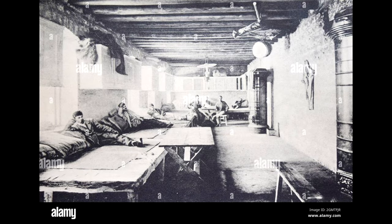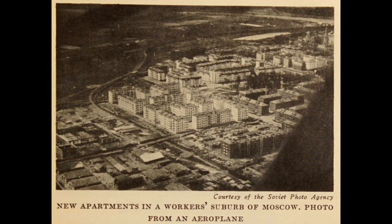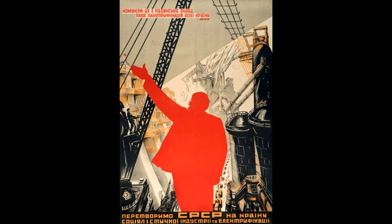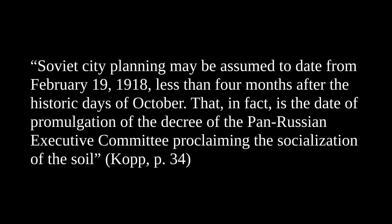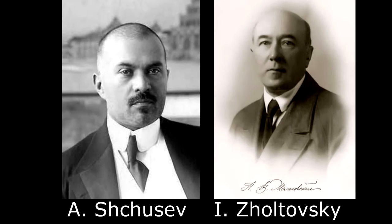Barracks living and especially homelessness were being gradually eliminated, although this was still far from what could be achieved under socialism in the 1930s, 40s and 50s. The Beginnings of City Planning. Modern city planning in Russia began with the October Revolution, with the decrees nationalizing the land. According to Kopp, "Soviet city planning may be assumed to date from February 19th, 1918, less than four months after the historic days of October. That in fact is the date of the promulgation of the decree of the All-Russian Executive Committee proclaiming the socialization of the soil." Progressive architects joined with the Bolshevik government in the monumental task of reconstructing the country on a rational basis.